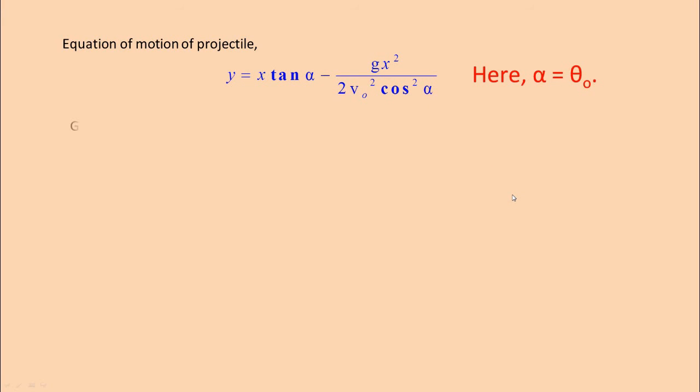But the given equation is y equals 2x minus 9x squared. You see, there is a very good comparison between the two: y and y, x and x, x squared and x squared. So you can easily compare and sort out things. Comparing the above two equations, here x, here x, so tan α is equal to 2. And here x squared, x squared, so the remaining thing: g by 2v₀ squared cos squared α would be 9. That is what is given here. So you already found here the value of tan α as 2.